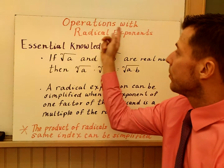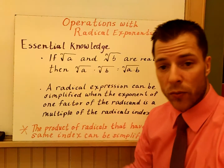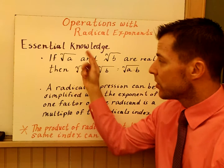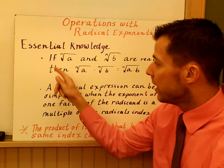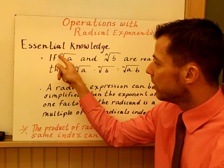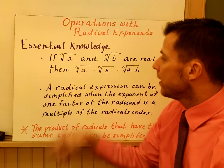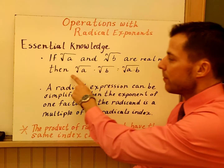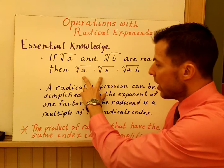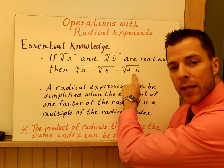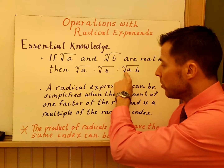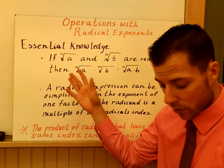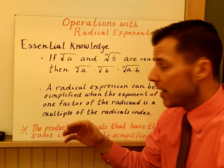Welcome to operations with radical exponents. The essential knowledge for today is: if root a and root b are real numbers and they have the same index, you can combine them under the same root and simplify. That's one of the biggest things we're going to talk about today.